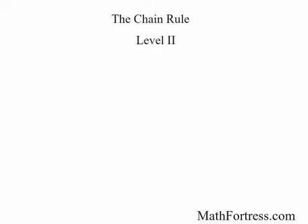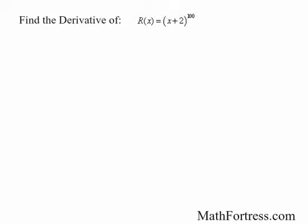Let's try some examples using the chain rule. Let's start with the function raised to a power. Find the derivative of r of x equals the quantity x plus 2 raised to the power of 100. You should be able to identify this as a composition of functions, where the outer function is equal to x to the power of 100 and the inner function is equal to the quantity x plus 2.